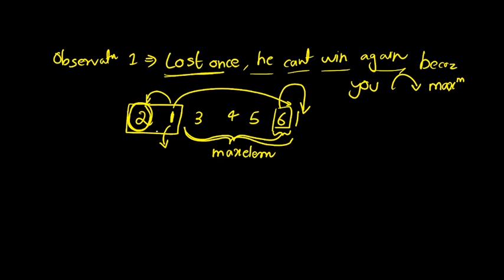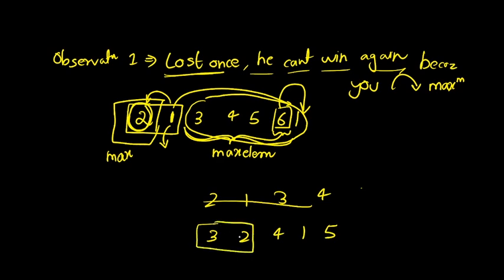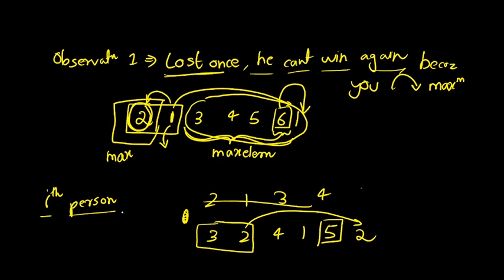Let me redraw with another example: [3, 2, 4, 1, 5]. Three and two fight; three wins, so two goes behind. Now two is behind five, the maximum element, so two can never win again. Once the maximum element reaches the front, no one can beat it. So the key insight is: we need to calculate how many times the i-th person wins before losing — that gives us our answer.